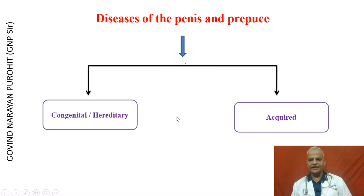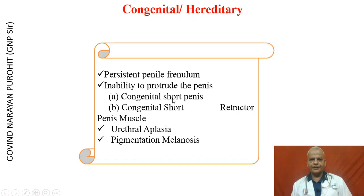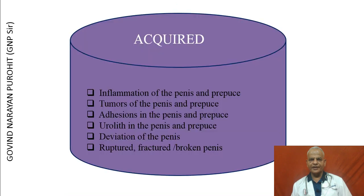The disease of the penis could be congenital or acquired. Hereditary problems include persistent penile frenulum, which results in inability to protrude the penis, and congenital short penis or congenital short retractive penis muscle. Urethral aplasia and pigmentation melanosis can also result in penile problems. Acquired problems of the penis and prepuce include inflammation, tumors, adhesions, uroliths, deviation of the penis, and ruptured, fractured, or broken penis.